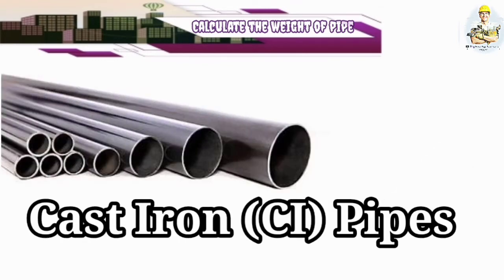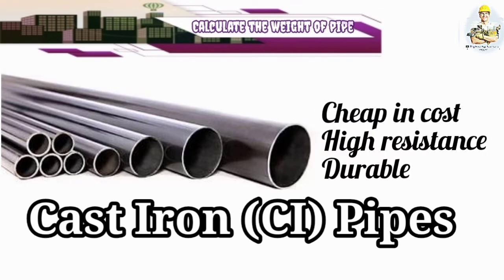Cast iron pipes are mostly used in water distribution systems mainly because of the following reasons: they are cheaper in cost. Cast iron pipes are cheaper in cost as compared to steel pipes, concrete pipes, or PVC pipes. It has high resistance to corrosion. Another purpose of cast iron pipe is it is highly durable.